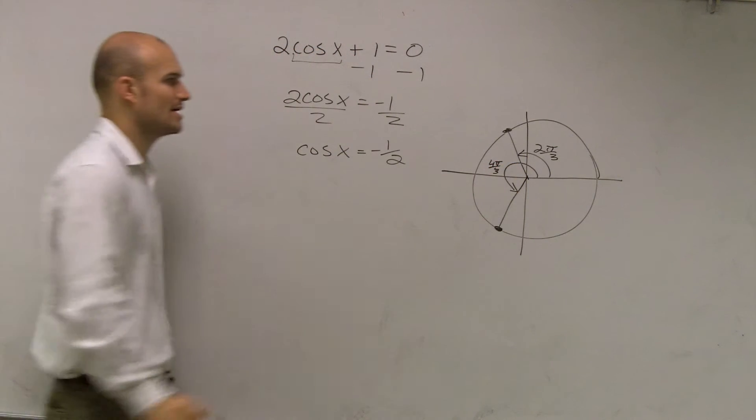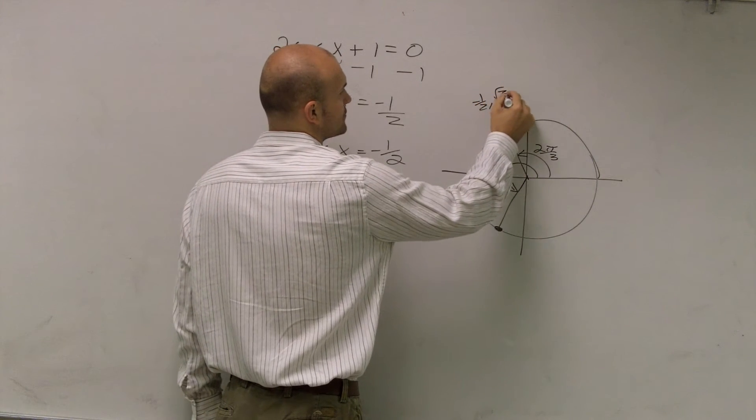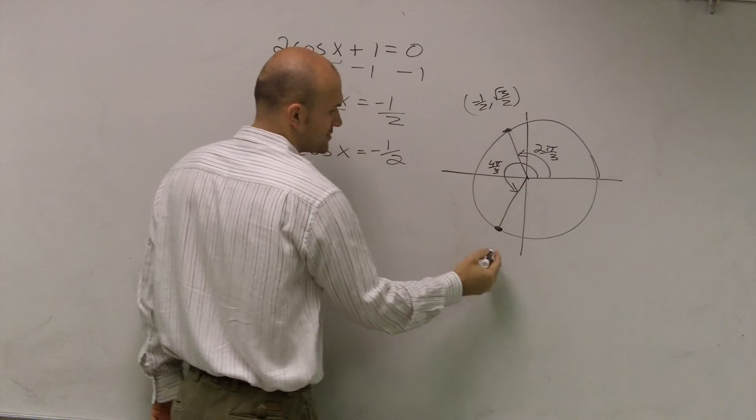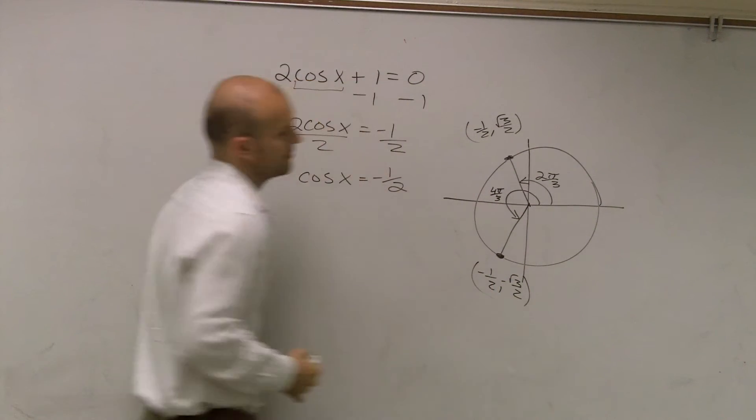I kind of just already have everything. Remember, this angle is negative 1 half, radical 3 over 2. This one is negative 1 half comma negative radical 3 over 2.